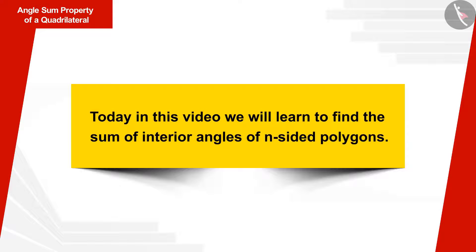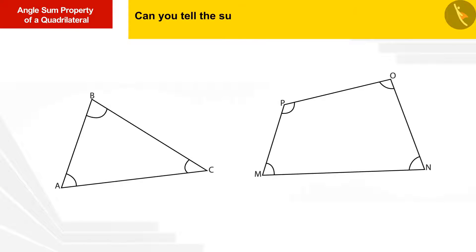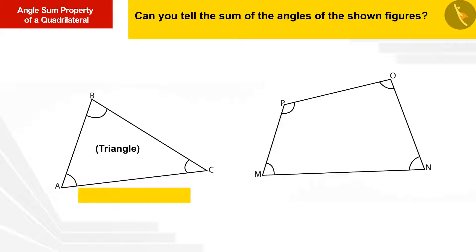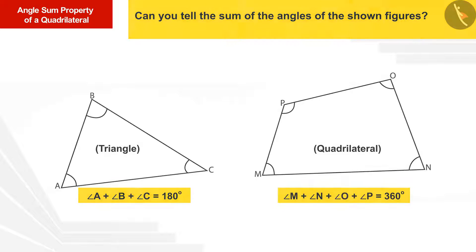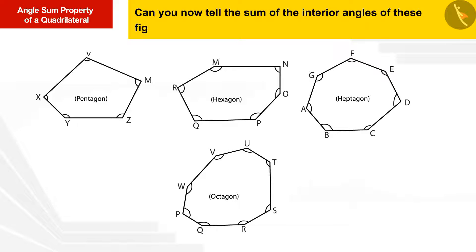Today we will learn to find the sum of the angles of polygons. The first shape is a triangle, and the sum of all its angles is 180 degrees. The second figure is a quadrilateral, and we have learnt that the sum of its 4 angles is 360 degrees.